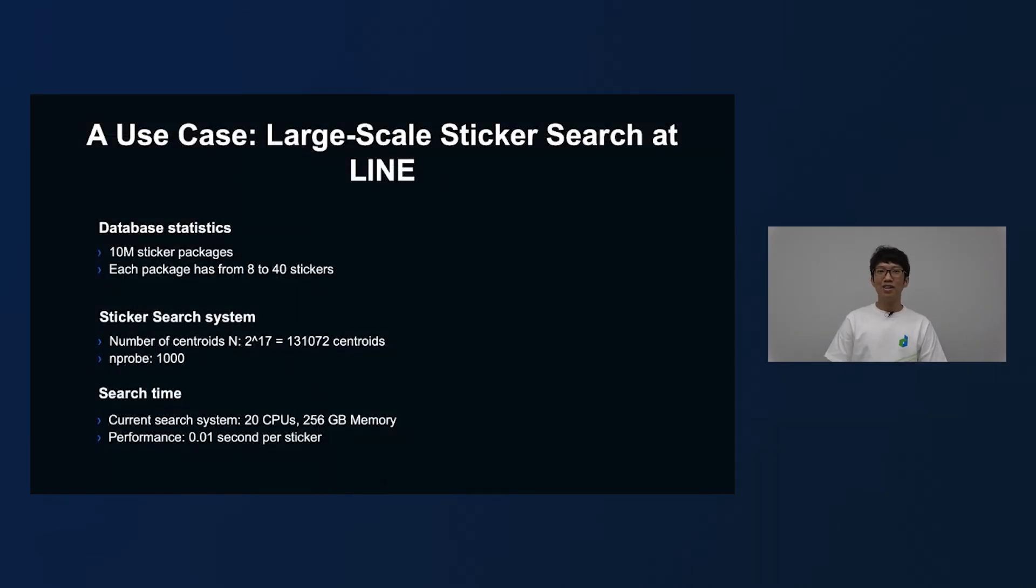In the next slide, I'm going to show the use case at LINE. We built the sticker search system on large scale. As of the middle of 2020, we have an interface of 10 million sticker packages, with each package has from 8 to 40 stickers. So it has approximately more than 300 million stickers to search off. Our developed sticker system has 2 to the power 17 centroids, and the nProb parameter is set to be 1000. So for the search time, it takes approximately 0.01 second per sticker search on a system of 20 CPUs and 256GB memory.